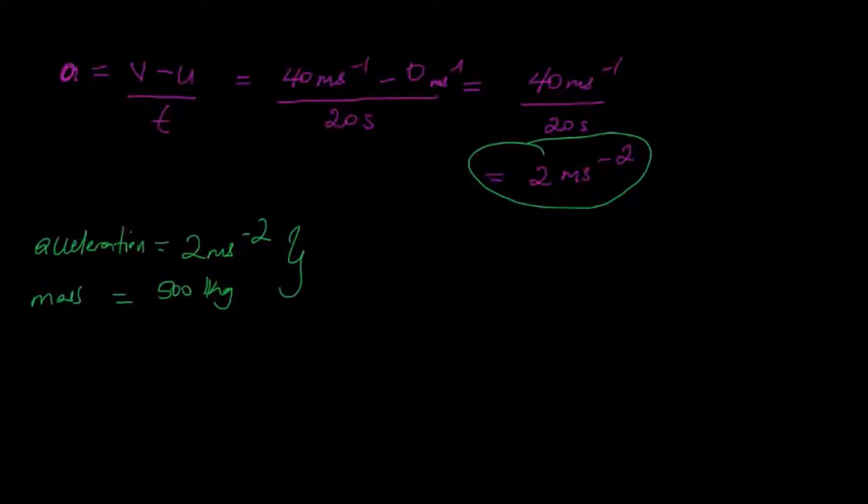Newton's second law expressed mathematically is written as force F equals mass times acceleration. We have the mass and our acceleration, so we can find the force that causes this acceleration: mass equals 500 kilograms multiplied by 2 meters per second squared.